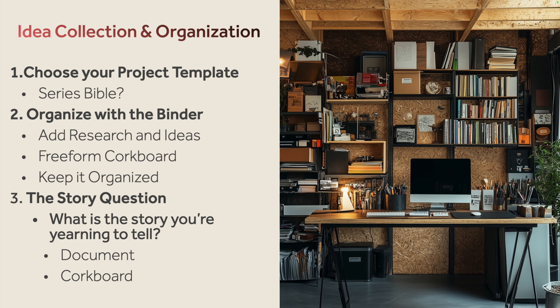The story question probes what is at stake for the characters and how will this story unfold. In this beginning stage of brainstorming, you want to explore various themes and emotional journeys and jot them down in a raw, unfiltered way — let the words flow onto the page and then come back later to refine them. You could start by creating a new document in the binder to outline your story question, or alternatively utilize the corkboard with its index cards and brainstorm a bunch of them, moving things around. The corkboard is really great for visual thinkers who thrive with a more freeform method.